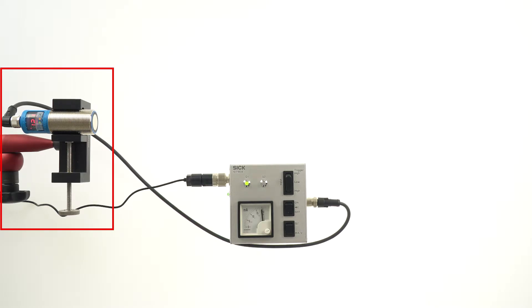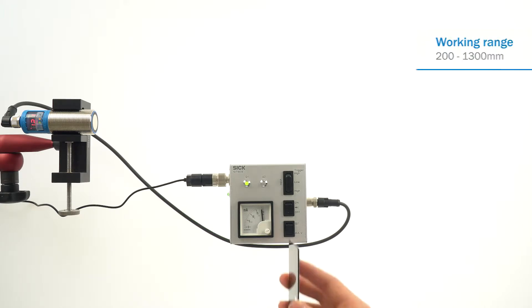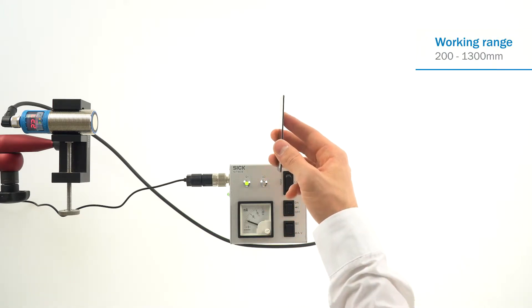A UM30-2 is horizontally clamped in a flexible arm. We have connected a sensor demonstration box between the power supply and the UM30-2. The setup is powered up. The measurement distance of the UM30-2 is within the working range of 200 to 1,300 millimeters.